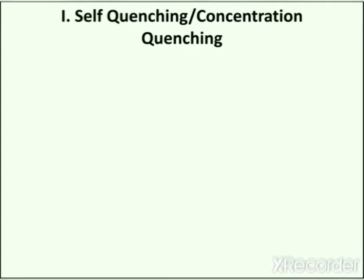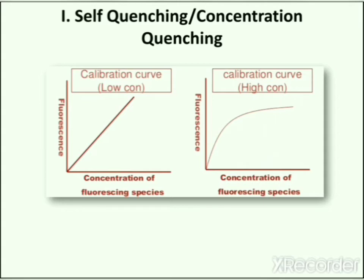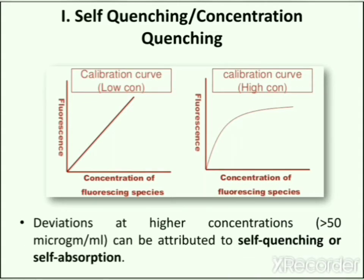First, we will understand self quenching, which is also known as concentration quenching. It occurs when the concentration of the fluorescent substance increases in a sample solution. The fluorescence intensity is reduced in highly concentrated solutions with more than 50 microgram per ml concentration.